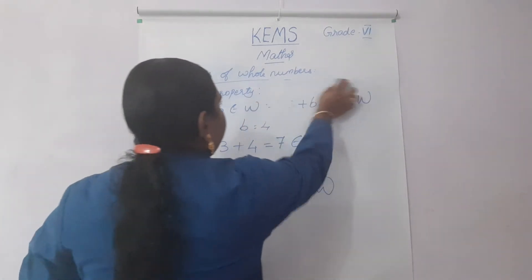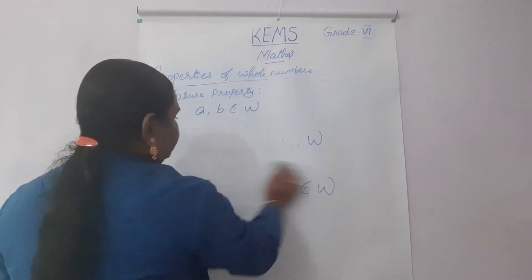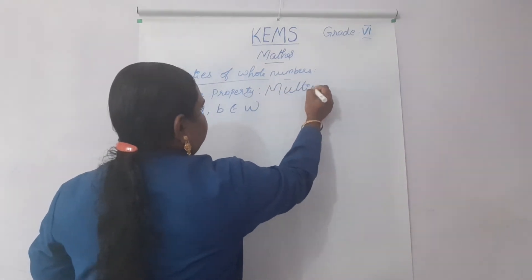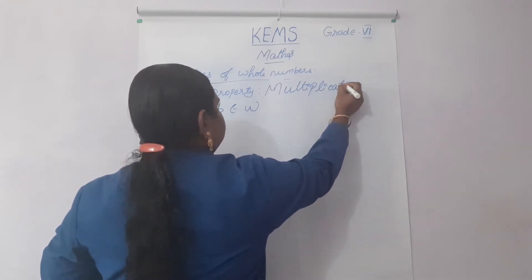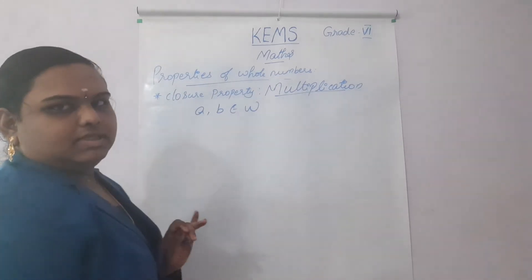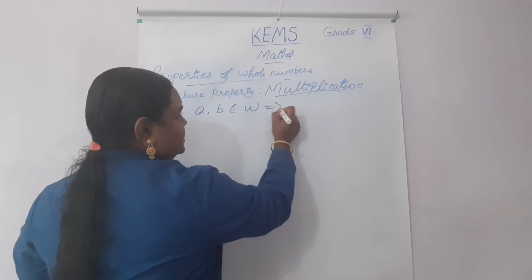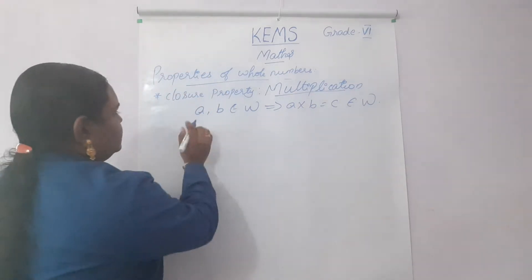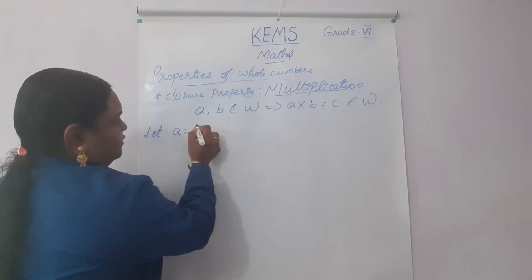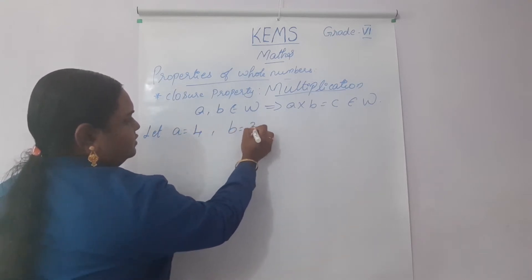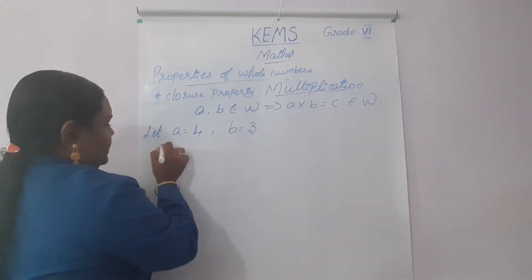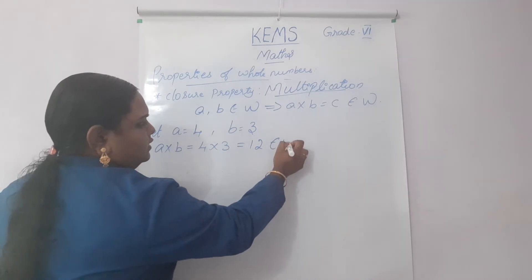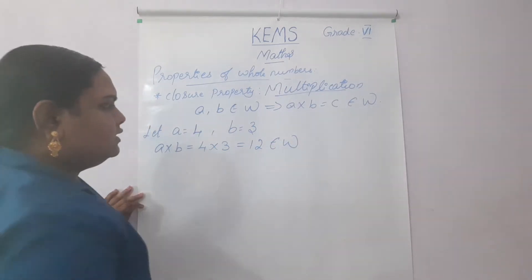Next is multiplication. Taking the same setup where A and B belong to W, the condition is A into B equal to C, and C should belong to whole numbers. Let A equal to 4 and B equal to 3. A into B equals 4 into 3, which is 12. 12 is a whole number, so it belongs to W.